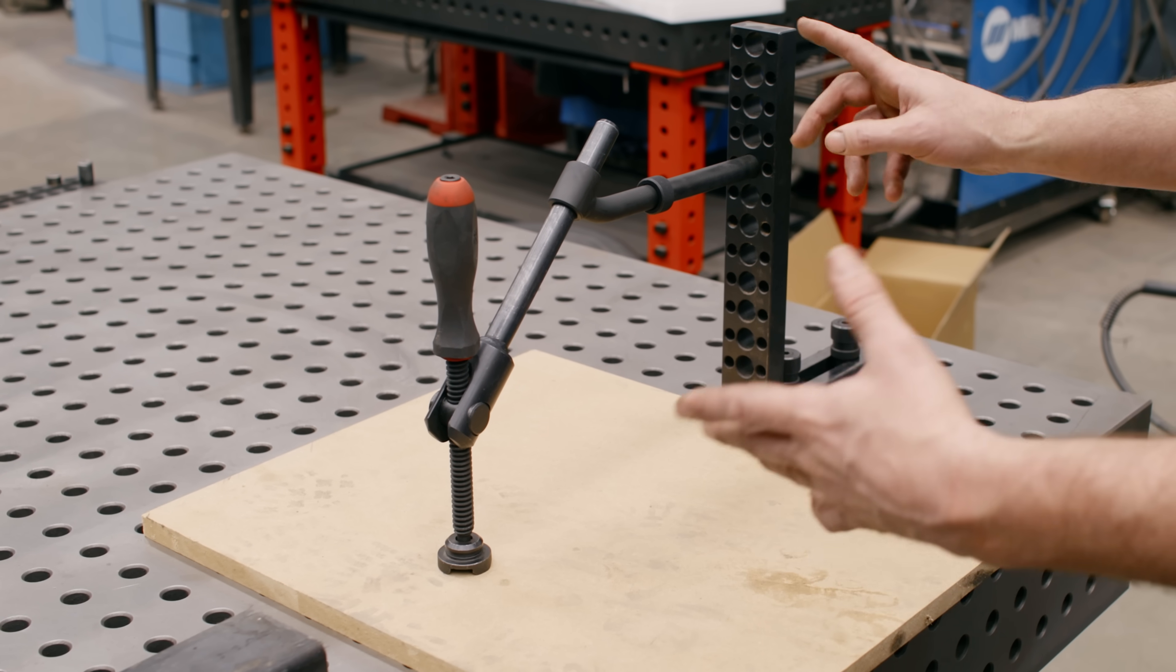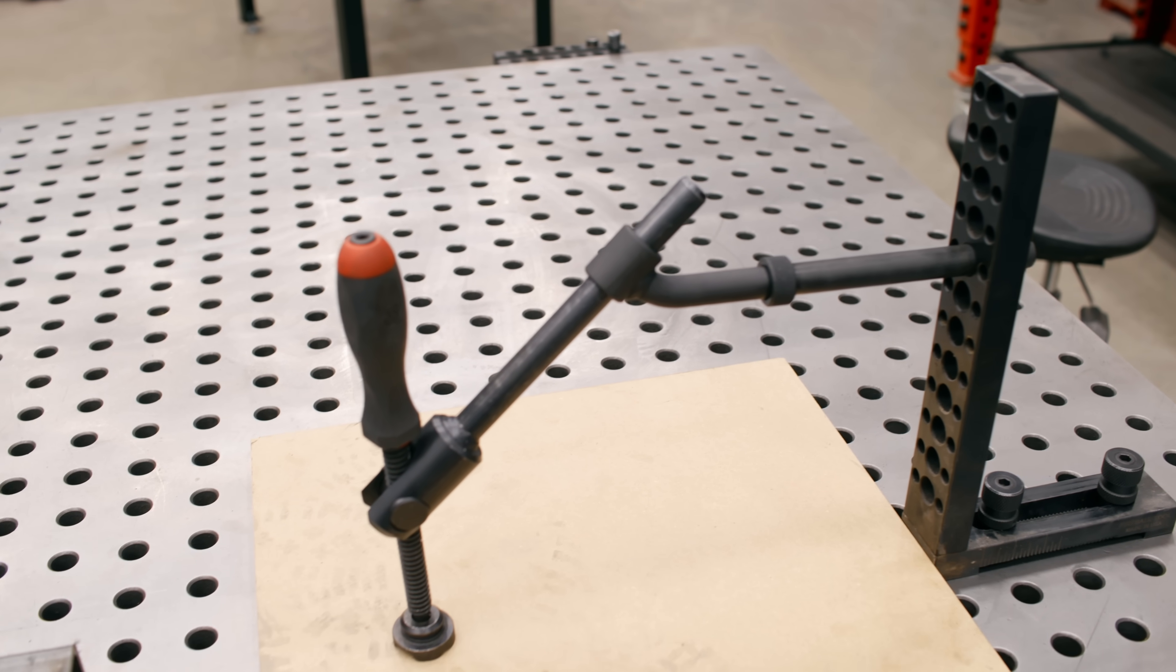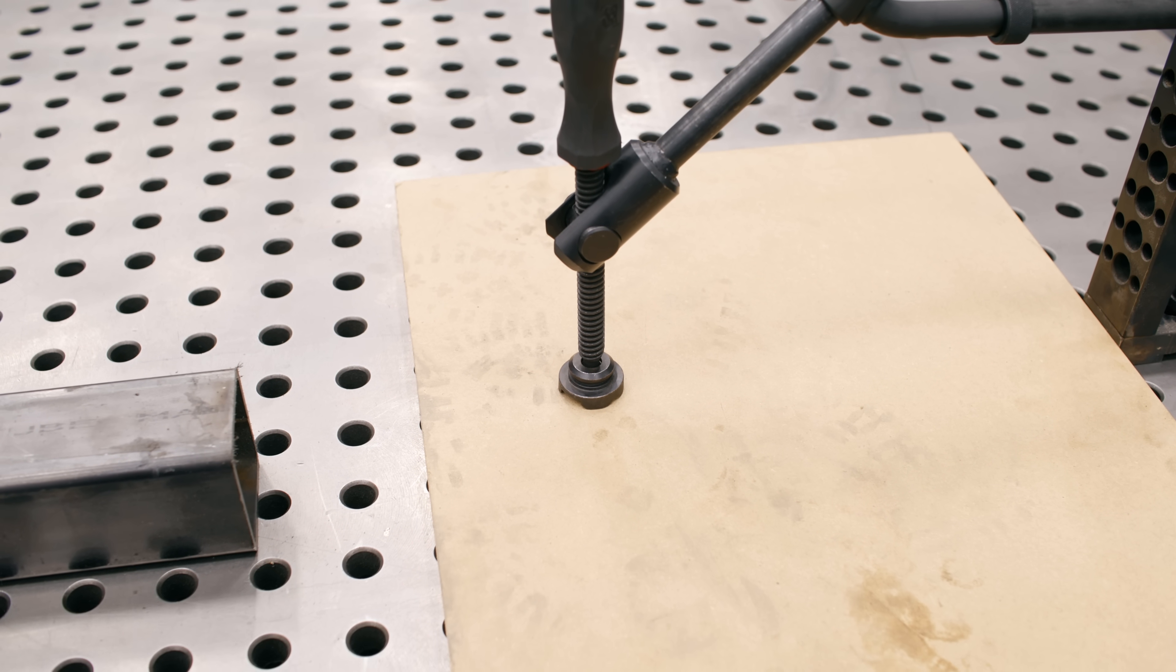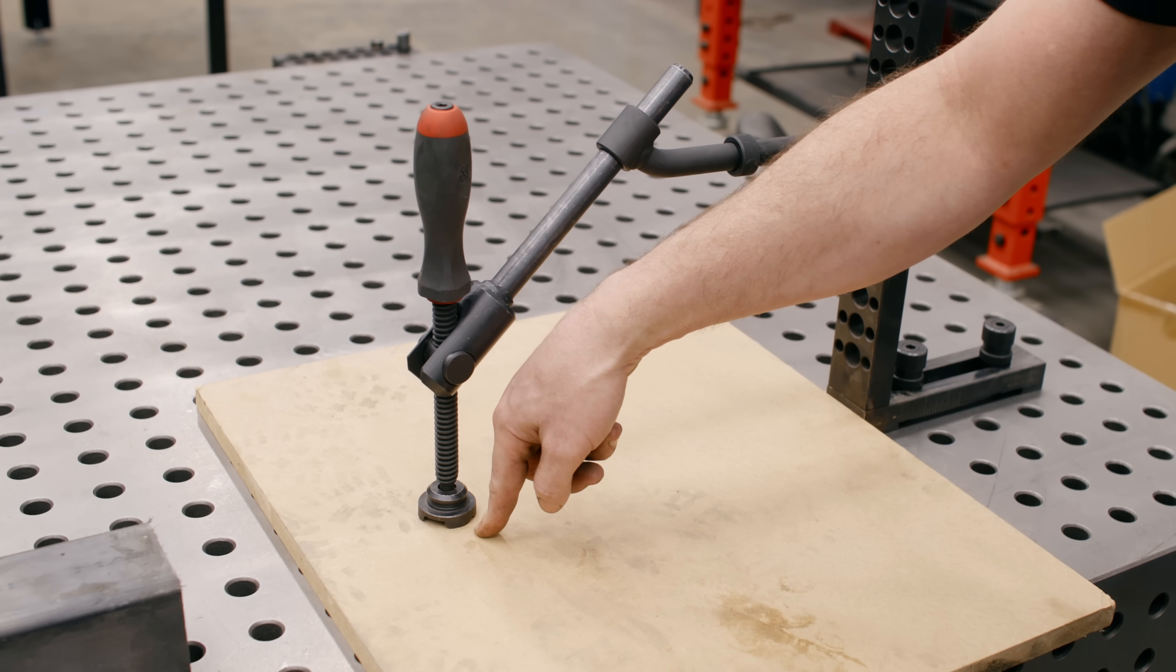One of the things this clamp's good at is reach now because we have a 45-degree bend. Now we can get distance. This is great if you have a big panel and you got a bow in here and you need to push down right in the center. You need some extra reach and you can do it with this clamp now, off of a riser extended out and nail your point.